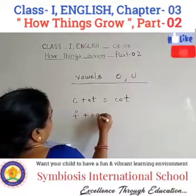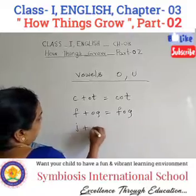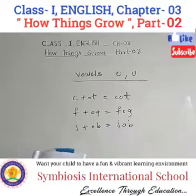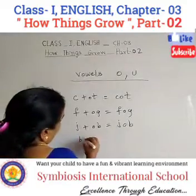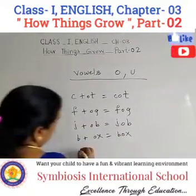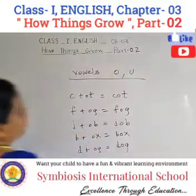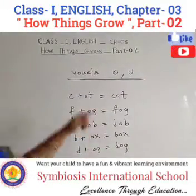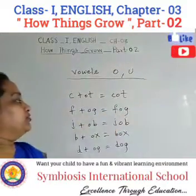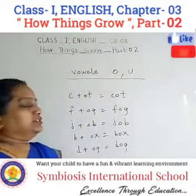Now we will learn vowel O. C plus O-D equals COD. B plus OX equals BOX. D plus OG equals DOG. Now, the vowel O: COD, FOG, JOB, BOX, DOG.